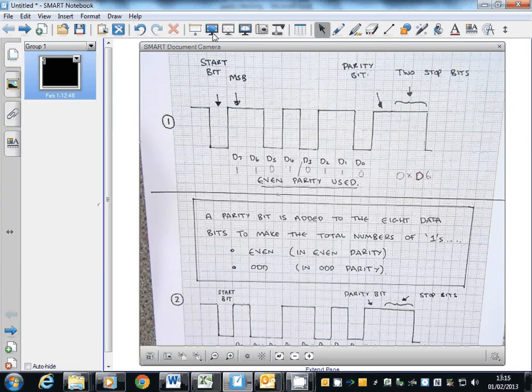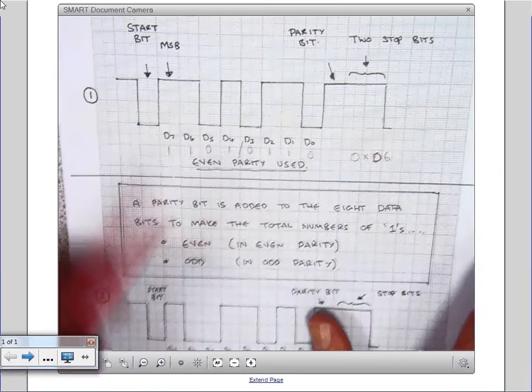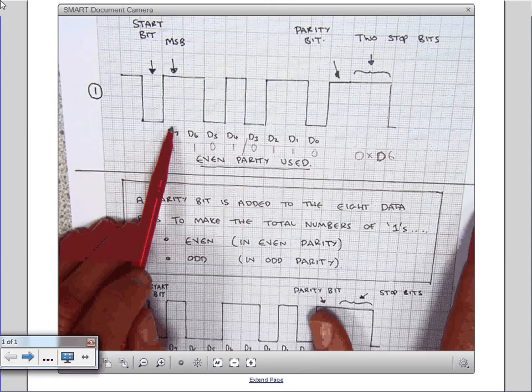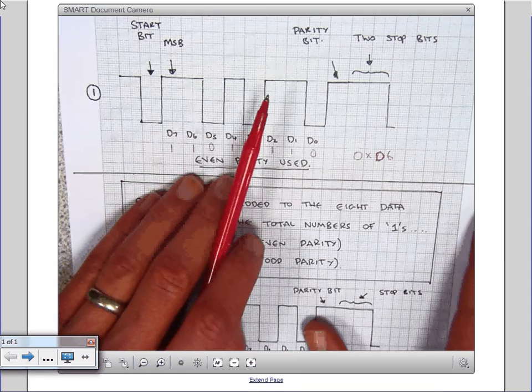So if we go back here, you'll see the low start bit and the two stop bits which are always high. And the start bit is always low according to our syllabus, the way we look at it. What about this parity bit?